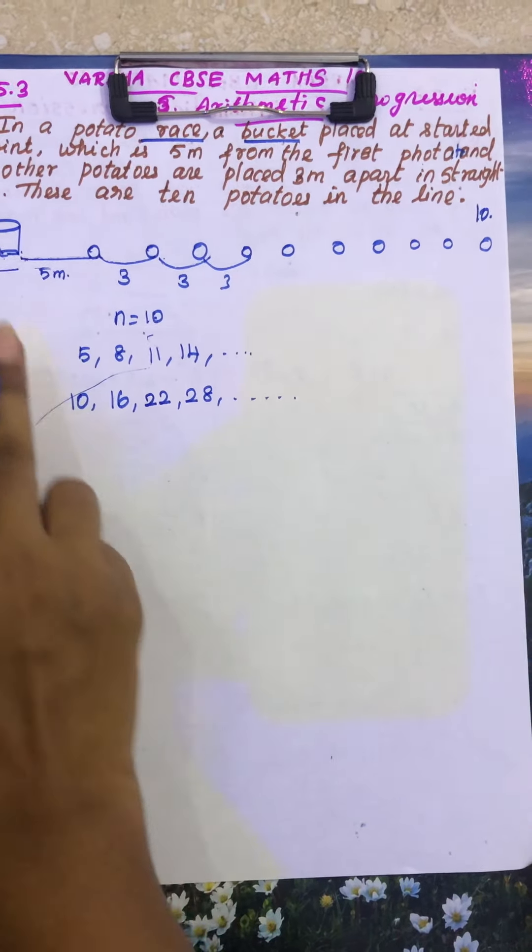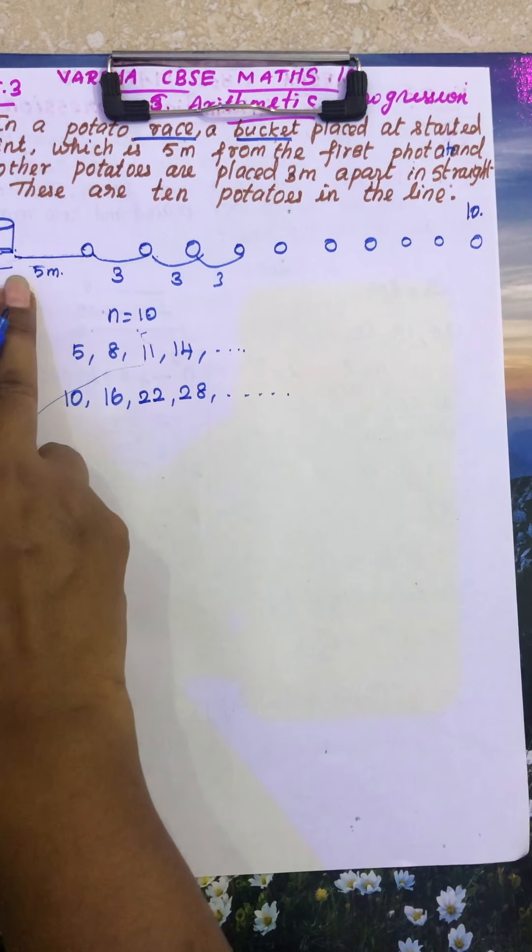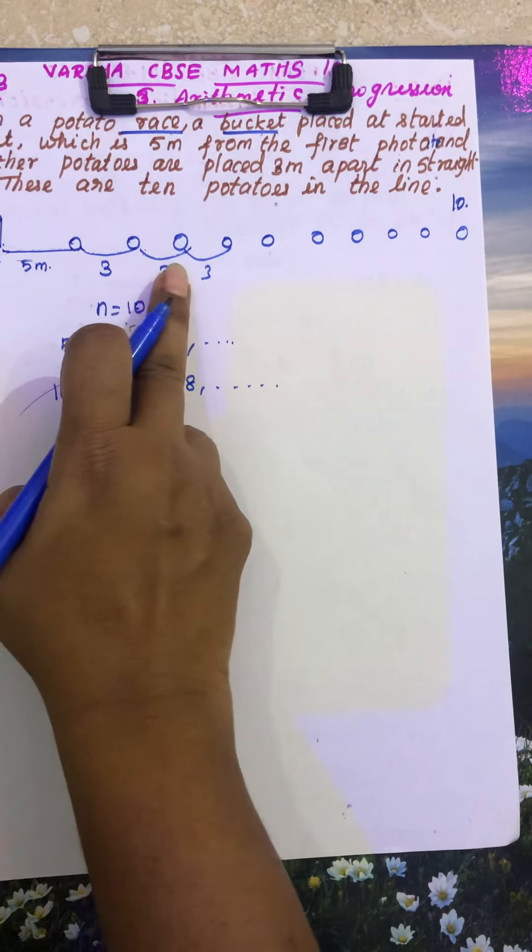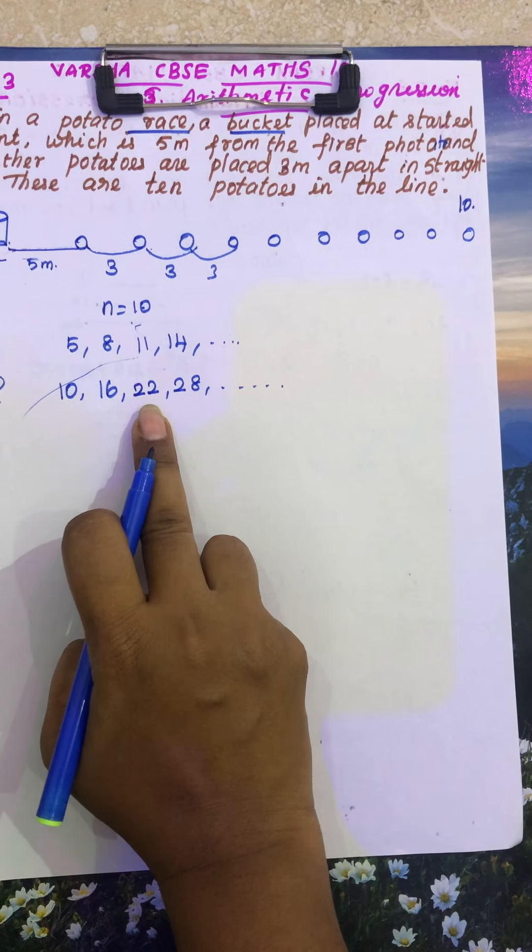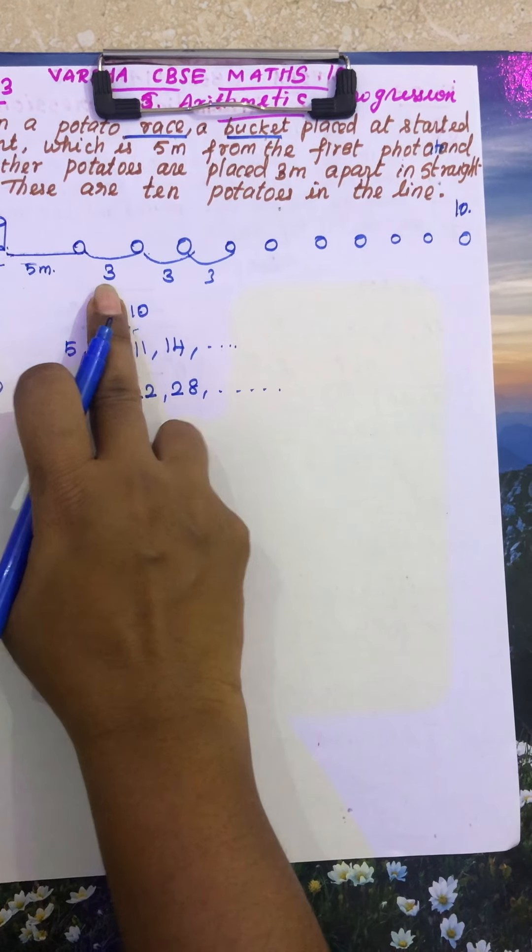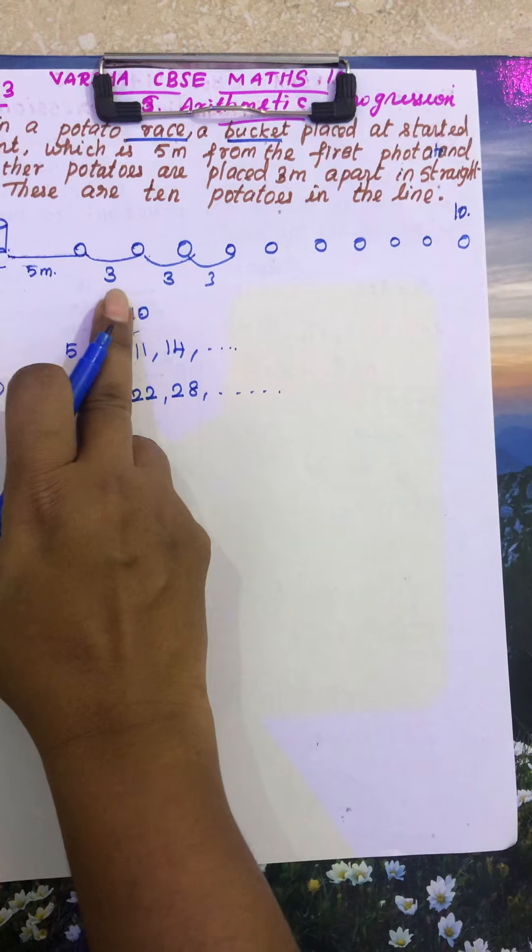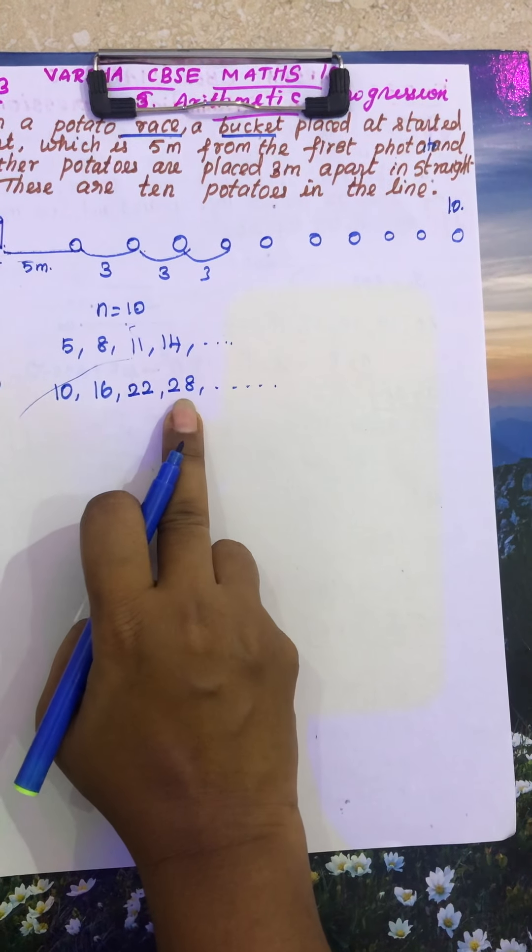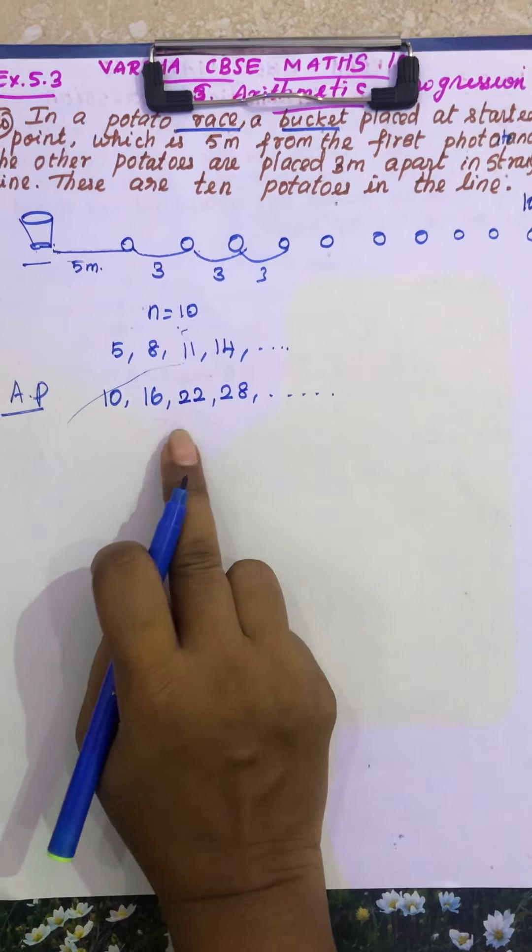So totally, see, this is 5 plus 5, 10, this is 8, 8 plus 8, 16, this is 11, 11 plus 11, 22. See, this is 14, 14 plus 14, 28 and so on.